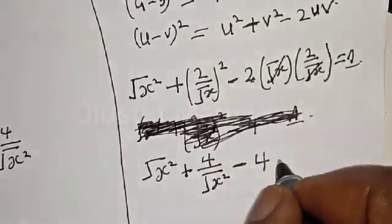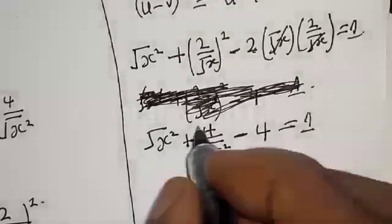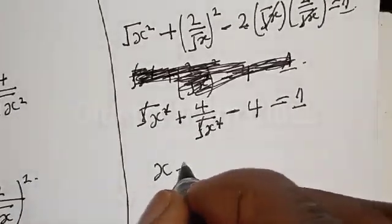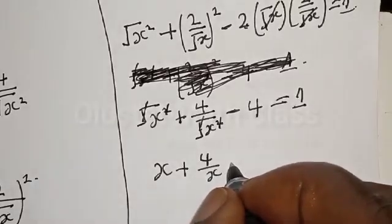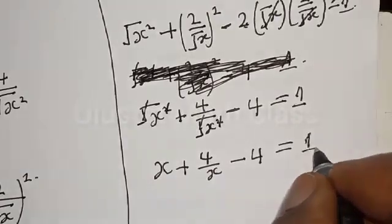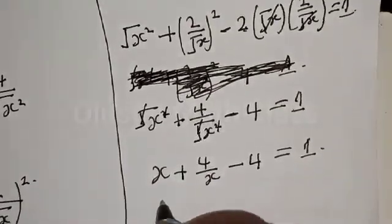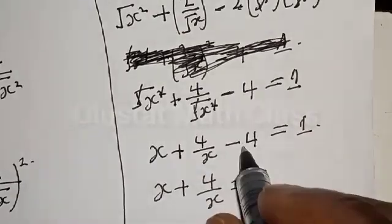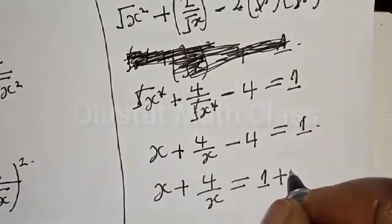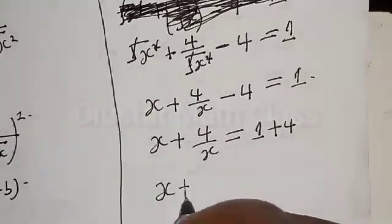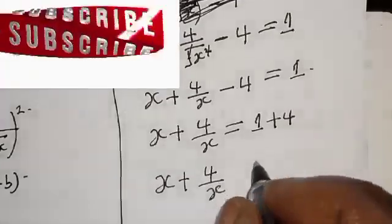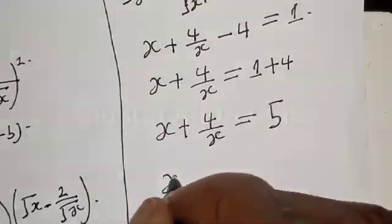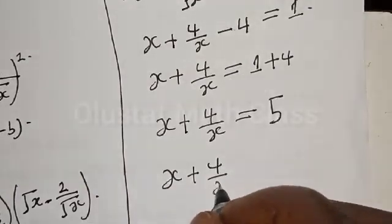Two squared is 4. This term cancels with this and that cancels with that, so we are left with s plus 4 divided by s minus 4 equals 1. Then we have s plus 4 divided by s equals 1. Moving minus 4 across the equal sign it becomes plus 4, giving s plus 4 divided by s equals 1 plus 4, which is 5.